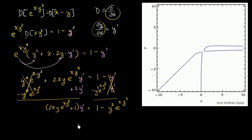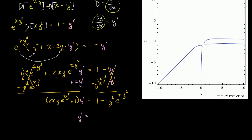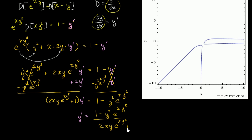Now we just divide both sides by that expression, and we're left with the derivative of y with respect to x equal to 1 minus y squared e to the xy squared, all over 2xy e to the xy squared plus 1. And we're done. It was kind of crazy, but fundamentally no different than what we've been doing in the last few examples.